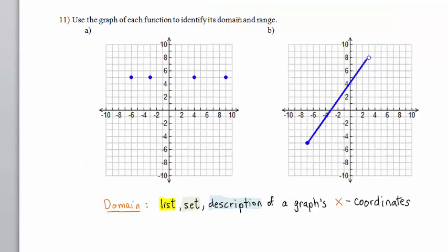Now let's look at Part B. We have a function that passes a vertical line test. What is its domain? Well, domain, as we have written here, is a list, set, or description of a graph's x-coordinates. In this case, we cannot label them one by one because there are infinitely many points. But we can describe where those x-values are situated.